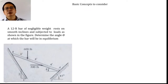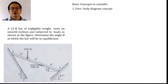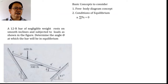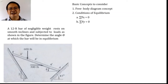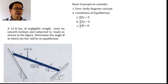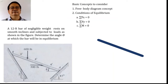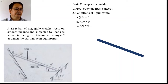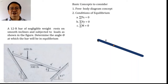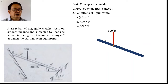Let us go back to the basic concepts needed to solve this problem. First, we need to understand how to draw the free body diagram of the bar, and how to apply the conditions of equilibrium — summation of forces along x and y equal to zero, as well as summation of moments about any axis equal to zero. In this isolated view of the object, we indicate the different forces acting. There is a point four feet from one end, where a force of 600 pounds acts.